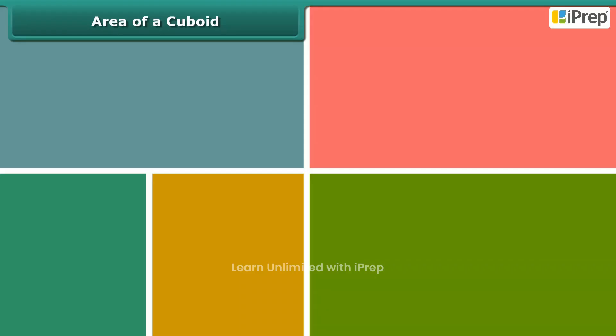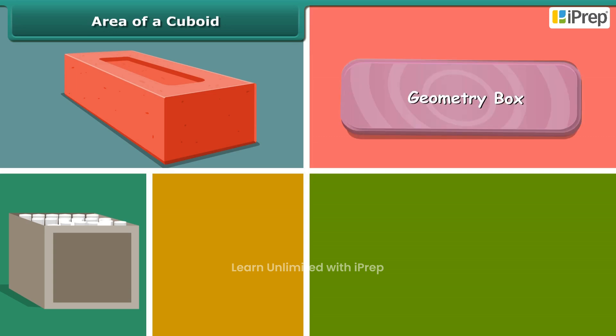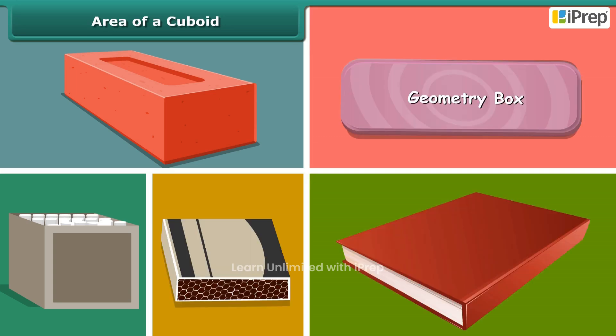Just guess the shape of brick, chop box, geometrical box, match box, and a book. That's right. These are all examples of cuboids.